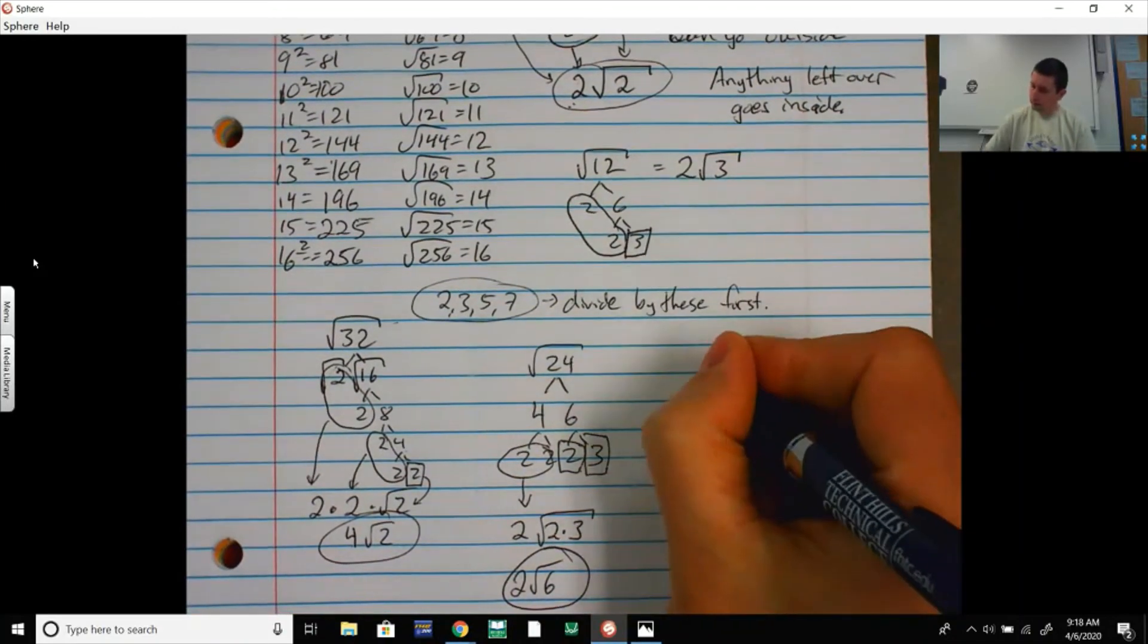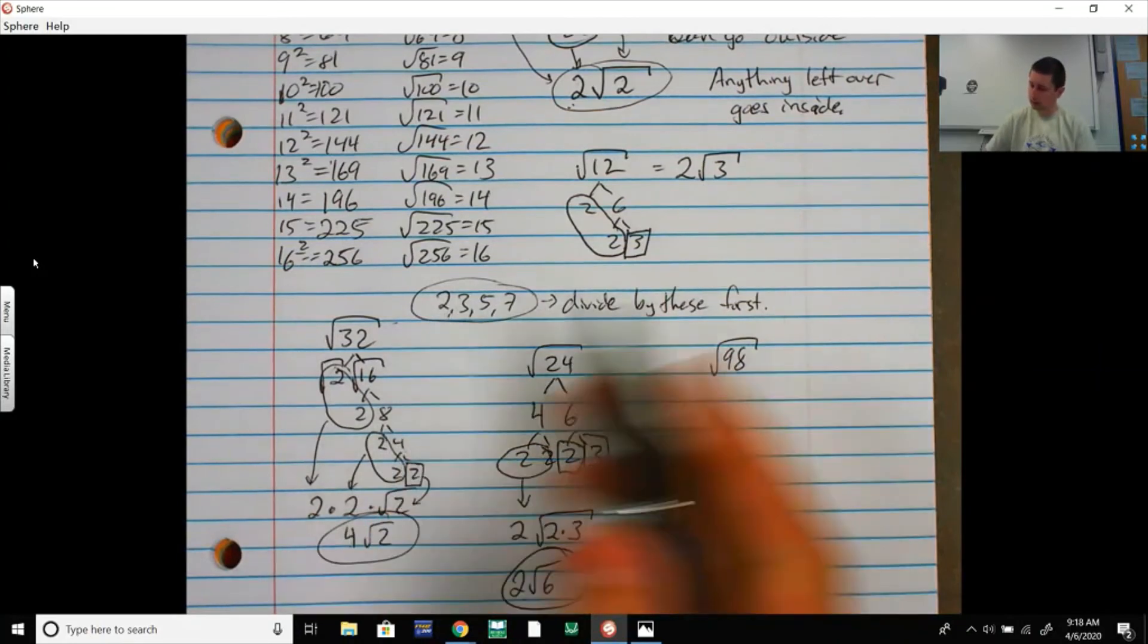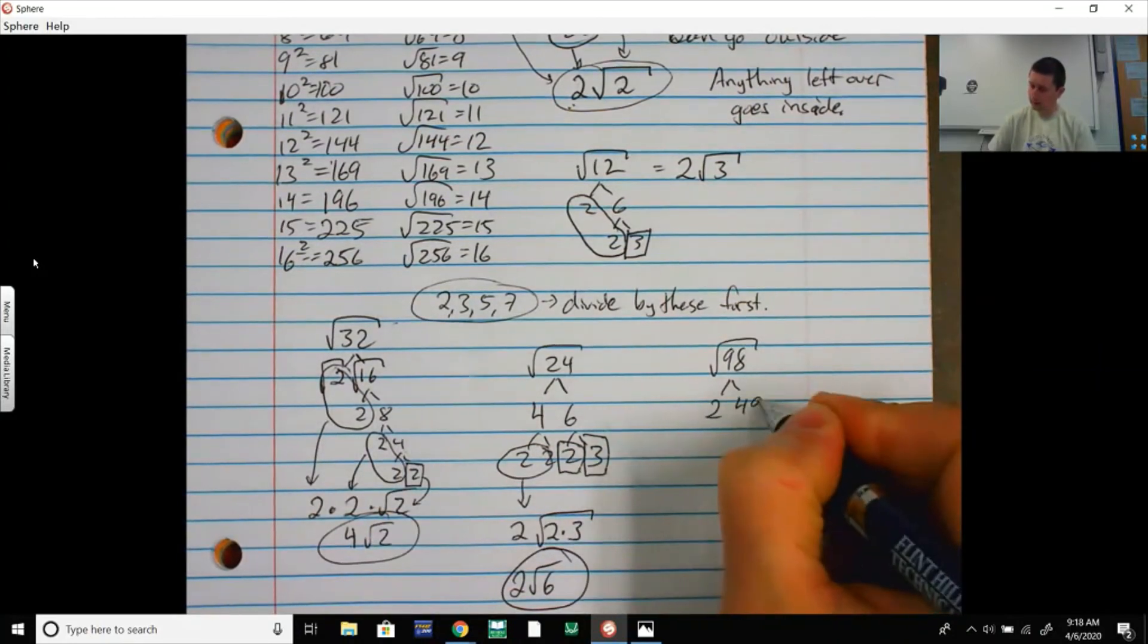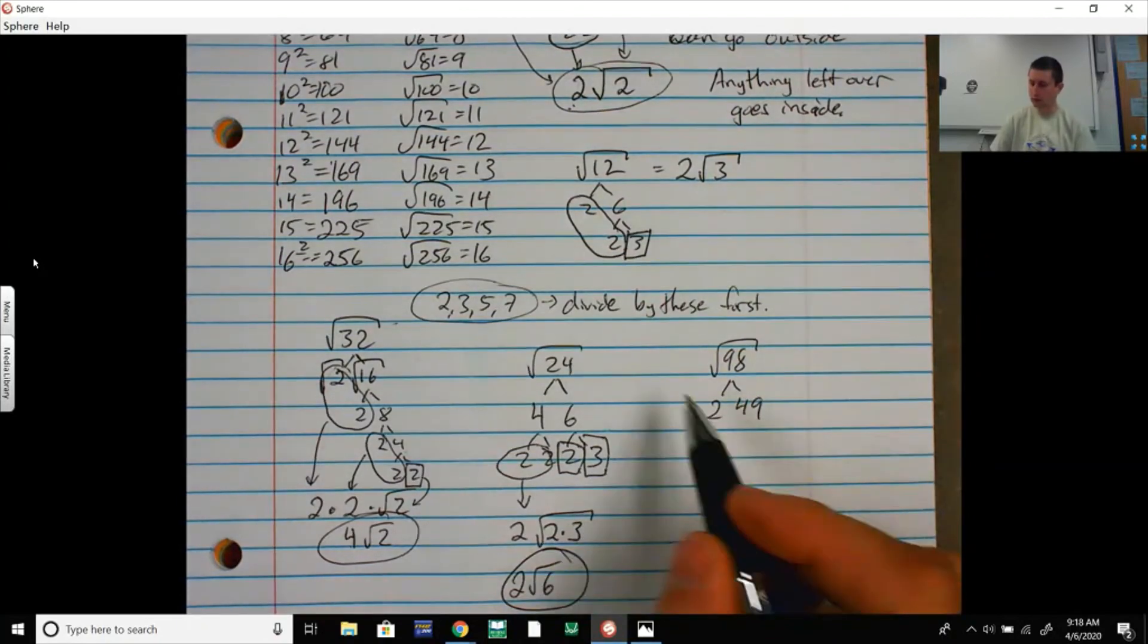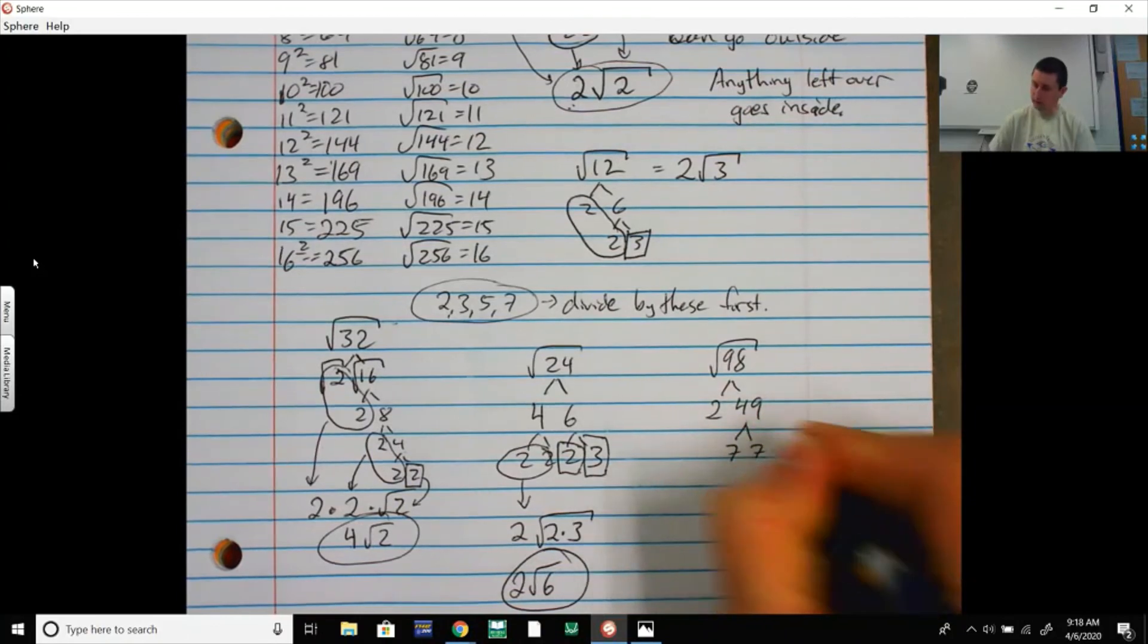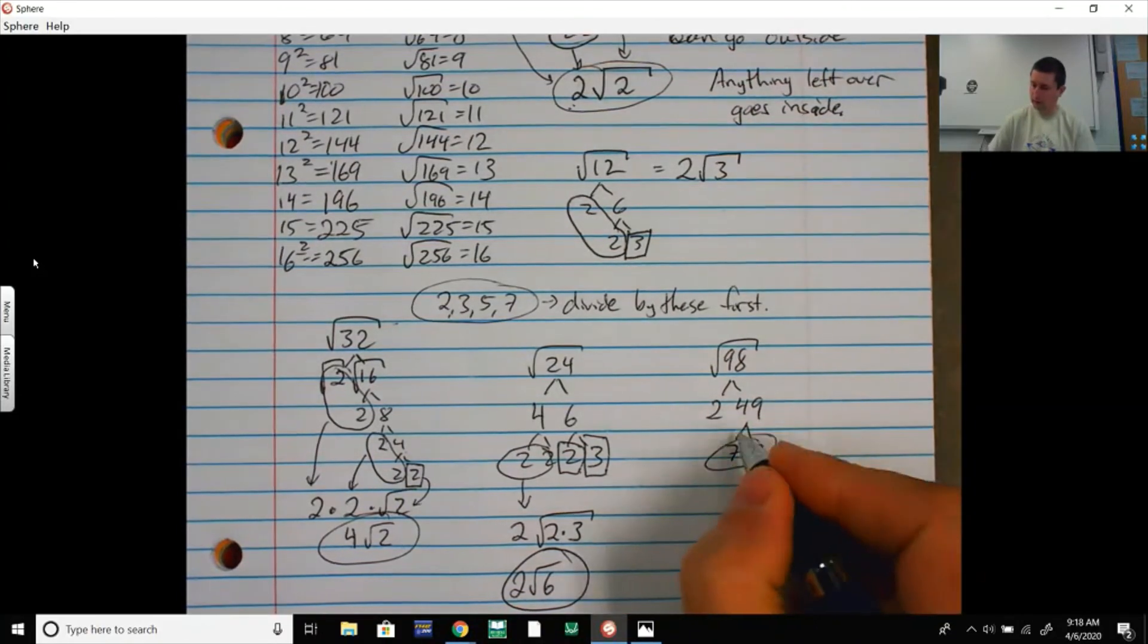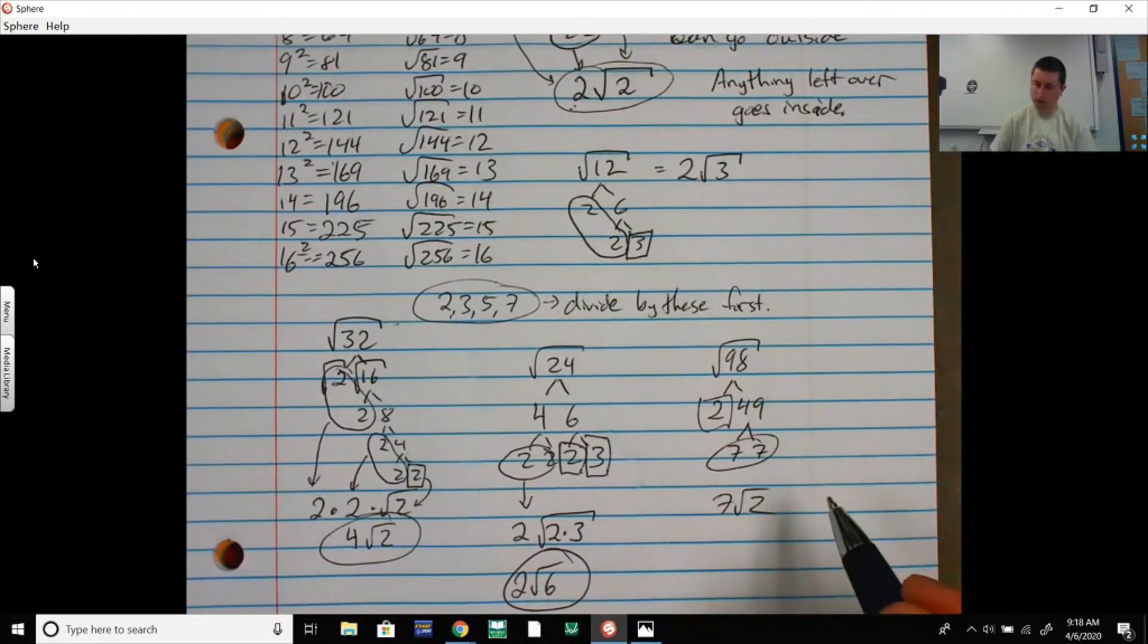Square root of 98 is sometimes a tricky one. But again, if you try these, you'll see. 2 goes into it. 2 and 49. Maybe you don't recognize what 49 is. So you try 2, it doesn't work. Try 3, it doesn't work. Try 5, it doesn't work. Try 7. And you see it's 7 times 7. You have a pair of 7s and a 2 left over. So it would be 7 root 2. Square root of 49 is 7. So this assignment is not on Big Ideas.